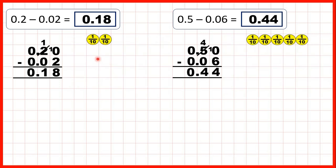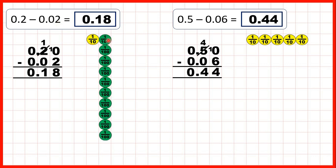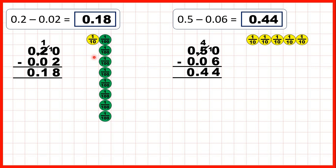We can also show the subtraction using place value counters. With 0.2 we have two tenths, but we want to take away two hundredths. To do that, we need to exchange one of our tenths for ten hundredths. That's why we did the exchanging to show one tenth, and that gave us ten hundredths. So when we took away two hundredths, we were left with one tenth and eight hundredths, or 0.18.